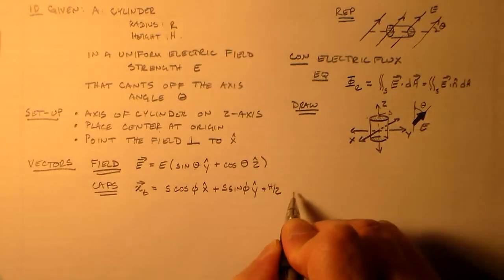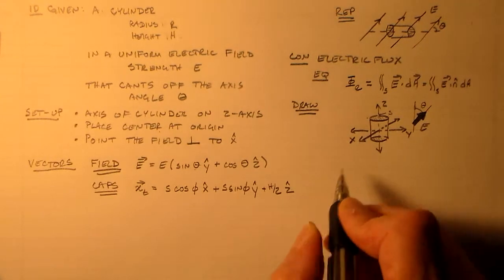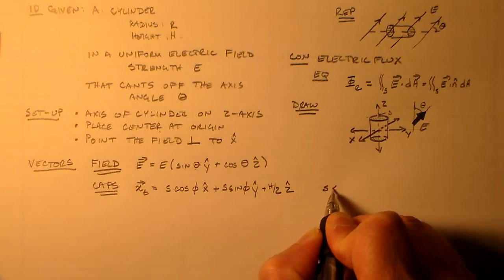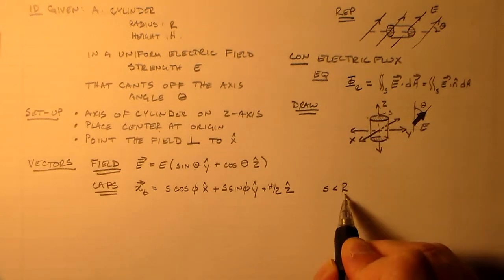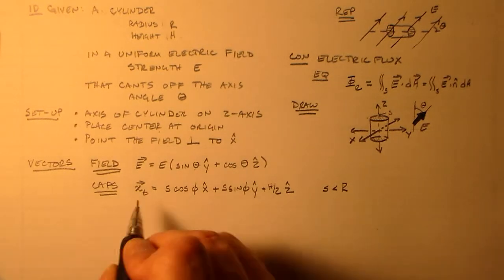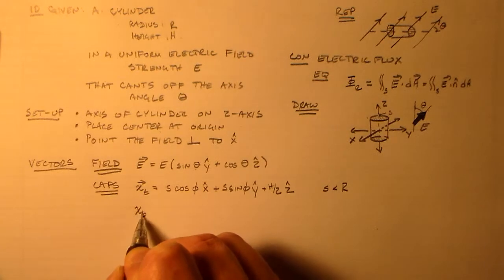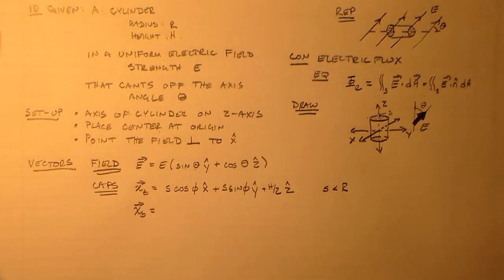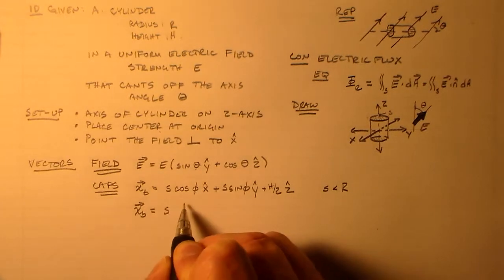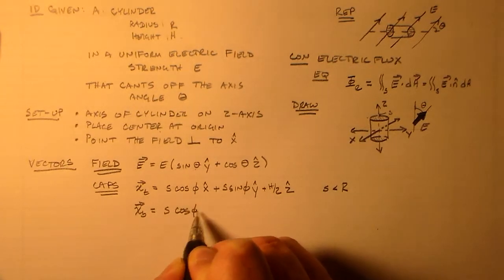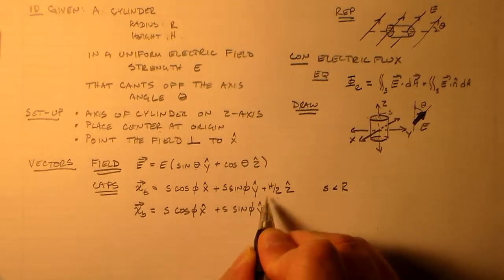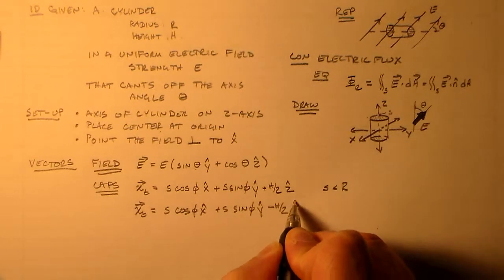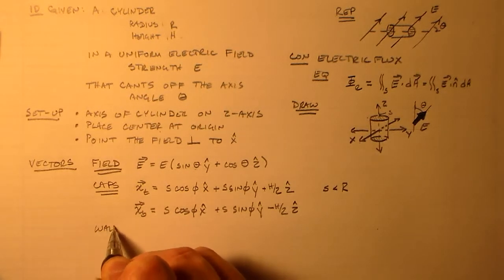So if theta is zero, it's pointing straight up the z-axis. If it's 90 degrees, it's pi over two. It's right along the y-axis. Okay. So then we need the cylinder. The cylinder's caps. That's, you know, this region here and this region here. These have positions. So for the top, for example, it is anything with this perpendicular coordinate S, right? So this is S. So any S from zero to R times the radius vector, or times in the radial direction, which is cosine phi x-hat, all right, plus sine phi y-hat.